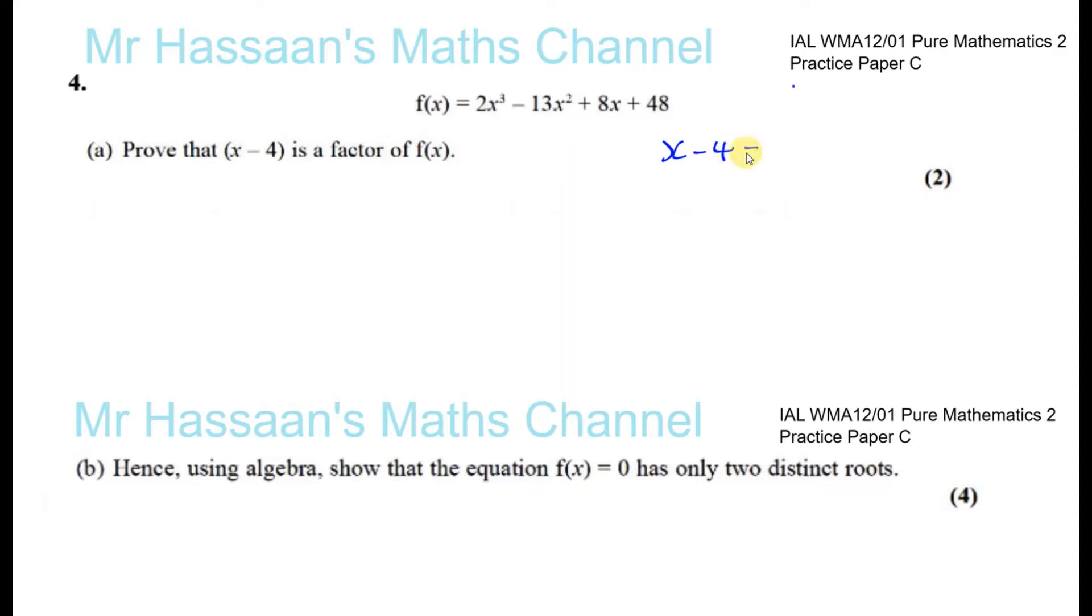So basically, what makes x minus 4 equal 0? Well, that's when x equals 4, so I have to substitute 4 into this function, and what should come out is 0. When it says prove, you have to not just show steps without any reasoning. So f(4) equals 0 if x minus 4 is a factor of f(x). We're giving a reason for our proof.